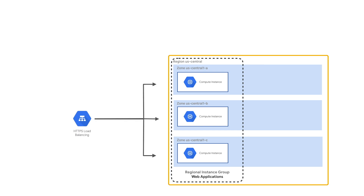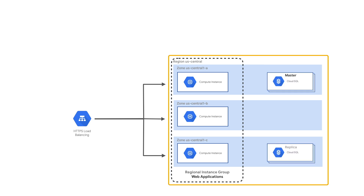Configure load balancing using the managed instance group that spans across zones. Create Cloud SQL in one zone as a master and enable a replica in another zone. Doing this means that in case the master becomes unavailable,